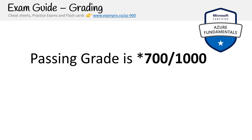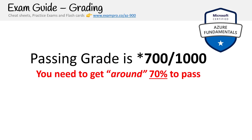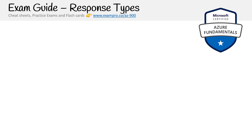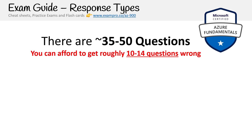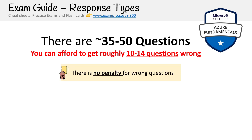Let's talk about grading — you need to get 700 points out of 1000, which is about 70%. Azure uses scaled scoring, meaning it's not strictly percentage-based. You could technically fail with 71% or pass with 69% — it's based on a point system, not raw percentage. You can get between 35 to 50 questions. About 10 to 14 questions you can afford to get wrong, and there is no penalty for wrong answers, so always fill in your answers.